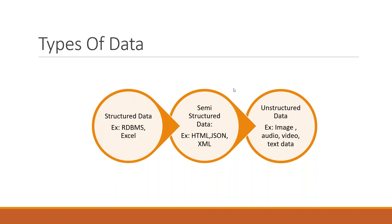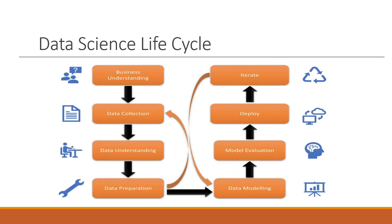Now let's go with the data science life cycle. For any data science project, we generally follow these steps. The first and foremost is business understanding. As we defined, data science is all about how to make decisions — with data science, we make decisions. Business understanding means clearly understanding the business problem.